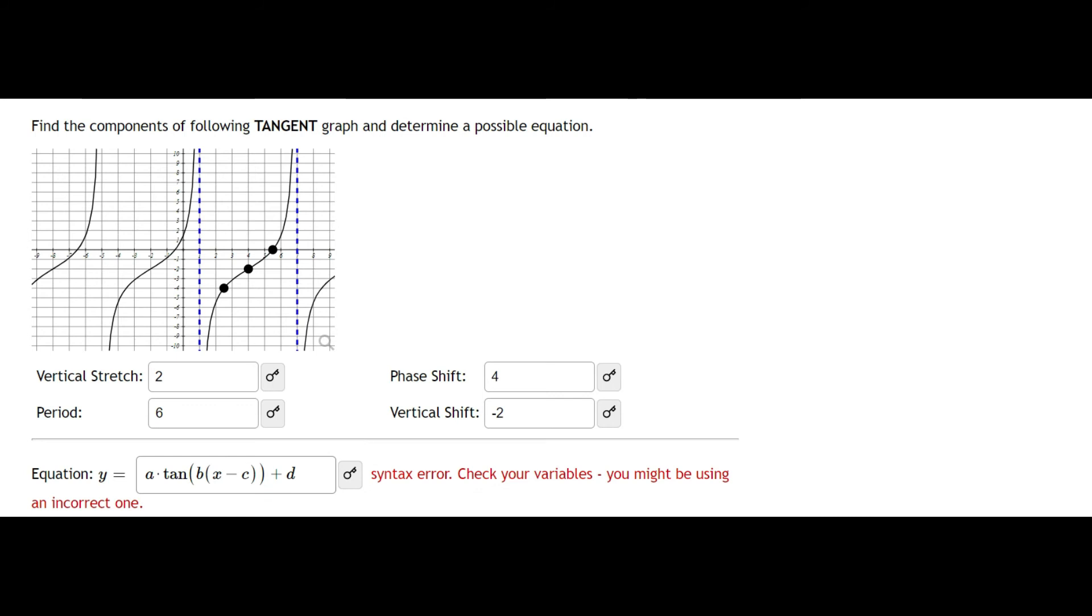What we want to do is plug in the values for each of these variables. So a, this is your vertical stretch. So this is where I'm going to put in 2. So here I'll erase a, and I'll put in 2.